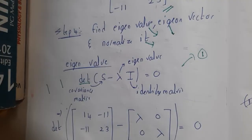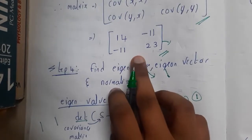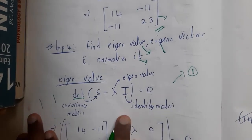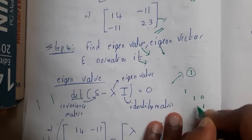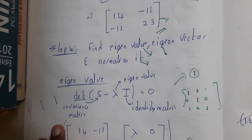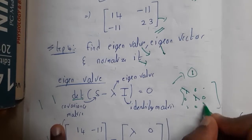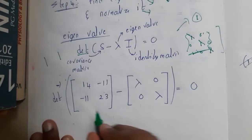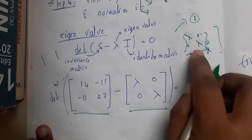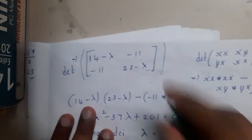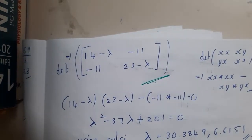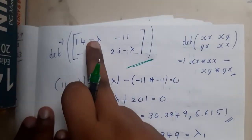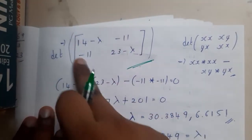For eigenvalues, the formula is: determinant of (S minus lambda times I) equals zero. Here S is our original 2×2 covariance matrix and I is the identity matrix — the one which has diagonal values as one. Multiplying S minus lambda·I and taking the determinant gives us a result. The determinant of a 2×2 matrix is: multiplication of the diagonal elements minus multiplication of the off-diagonal elements.